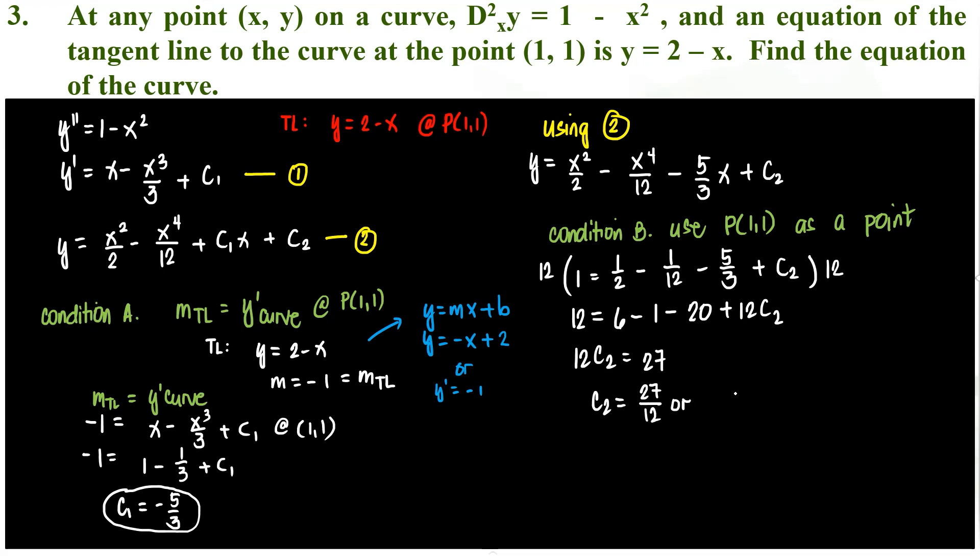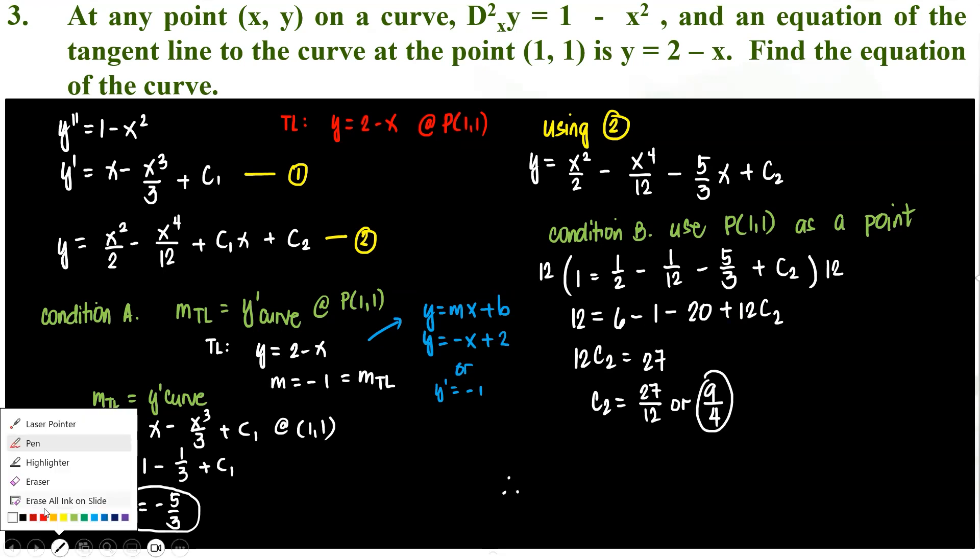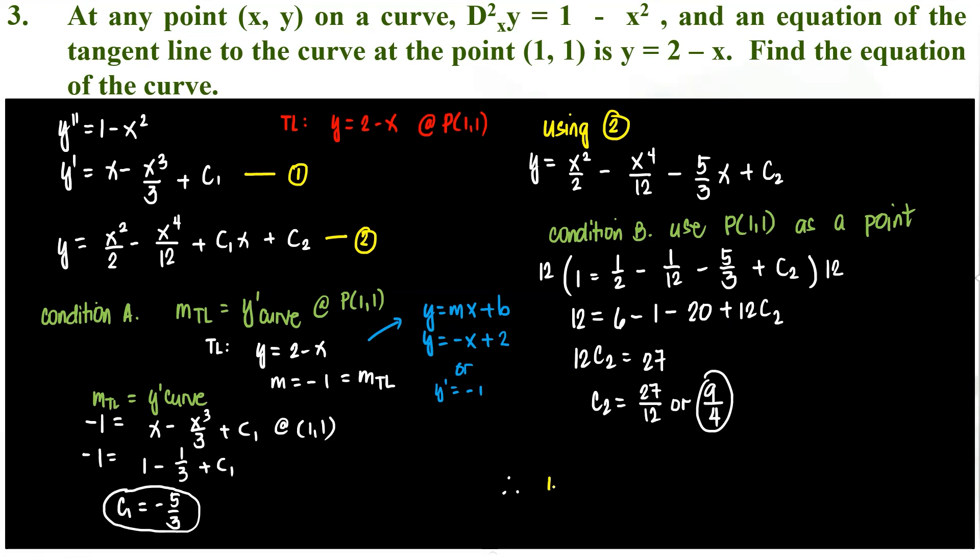Or if you divide everything by 3 this is 9 over 4. Am I correct? Therefore the final answer would be, let's go back to equation 2, that's going to be in the form of x squared over 2 minus x to the 4 over 12 minus 5 thirds x plus 9 over 4.